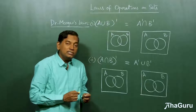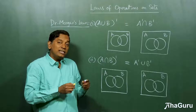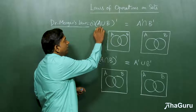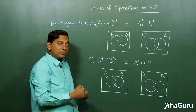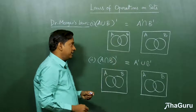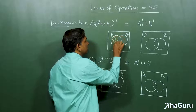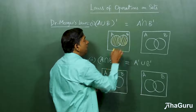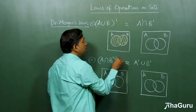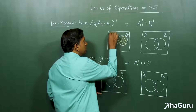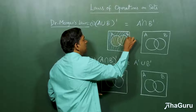The next set of laws is what are known as De Morgan's laws. They concern union and intersection along with complement. The first one is: A union B, the whole complement, is A complement intersection B complement. And just like we did with distributive law, let's try and show this using Venn diagrams. So first, A union B will be this yellow region. Now A union B the whole complement will be whatever is in the universal set — which is the rectangle here — but not inside A union B. So the correct answer is the blue region, which is A union B the whole complement.